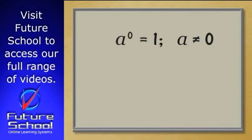You can check this new rule for yourself on your calculator. Enter any number, raise it to the power of zero, and see what you get. For example, three to the power of zero equals one. 27 to the power of zero equals one.